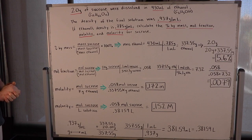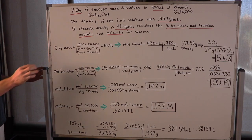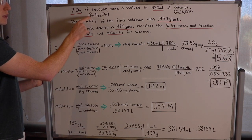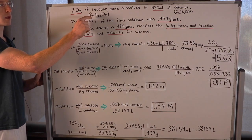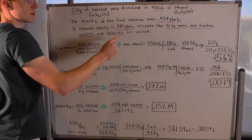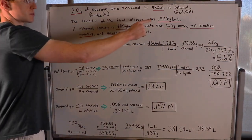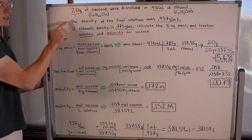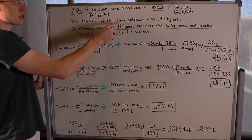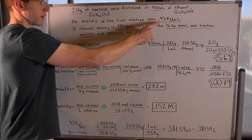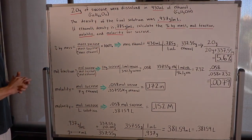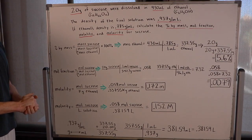Okay, let's go through a problem to see how this all works in practice. 20 grams of sucrose, and I've got the molecular formula of sucrose right here, were dissolved in 430 milliliters of ethanol, and there's ethanol's molecular formula. The density of this final solution was 0.937 grams per milliliter. If ethanol's density is 0.785 grams per milliliter,